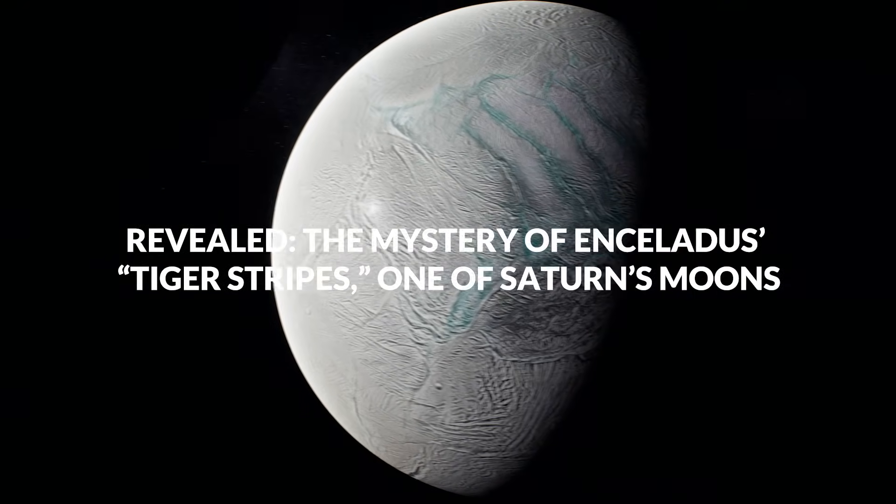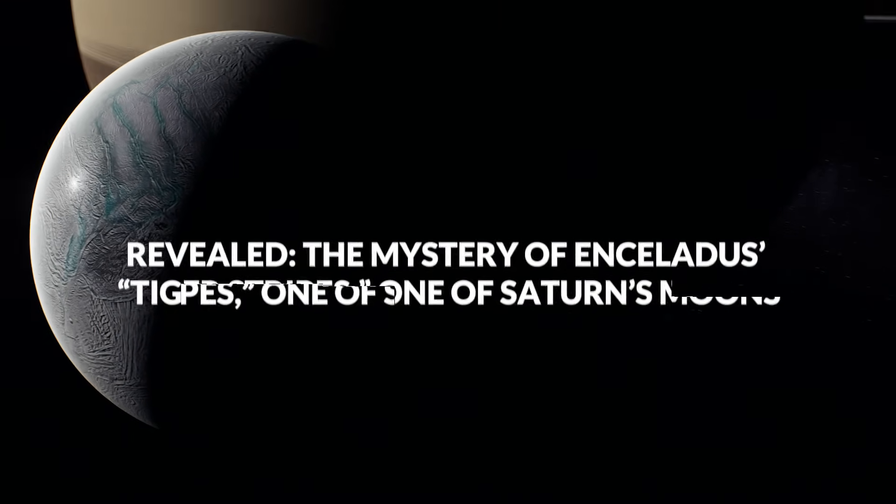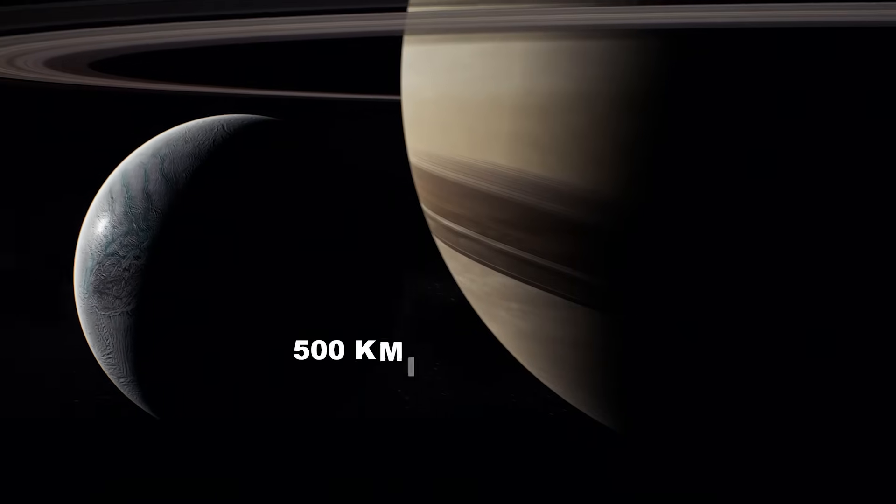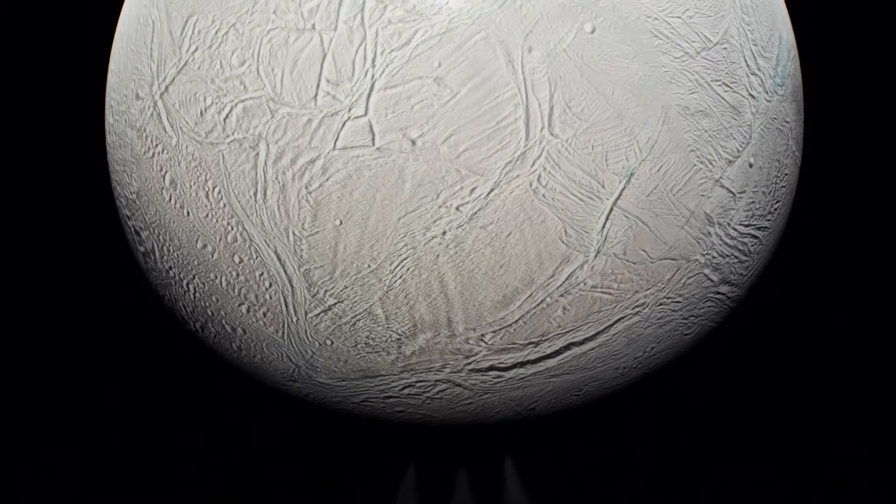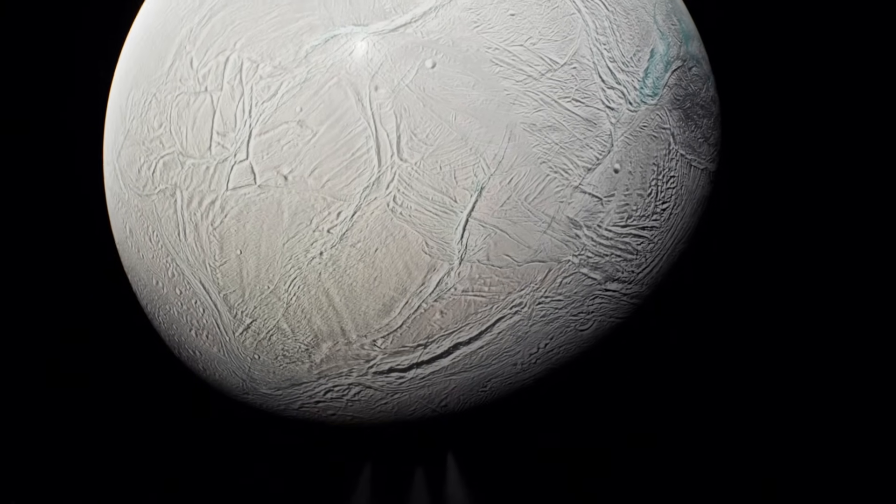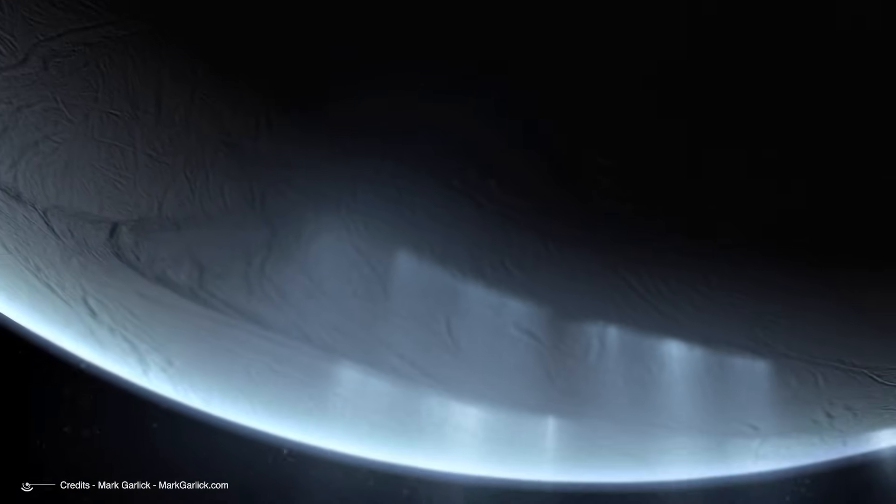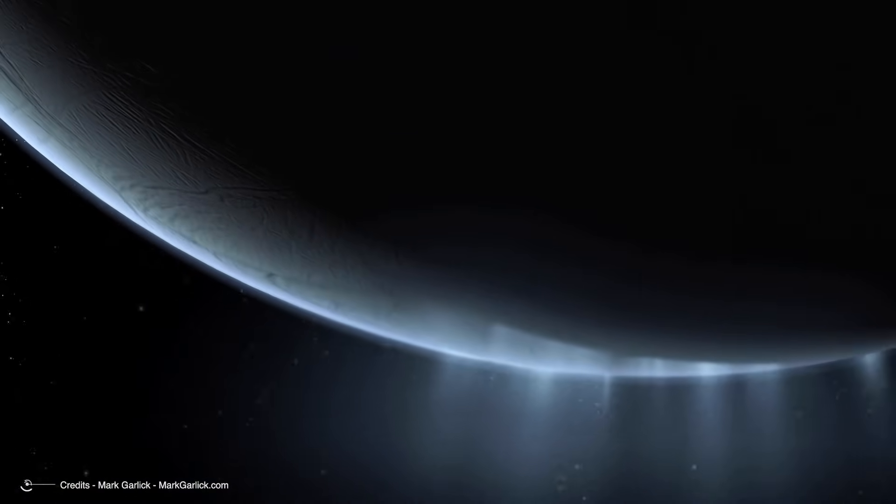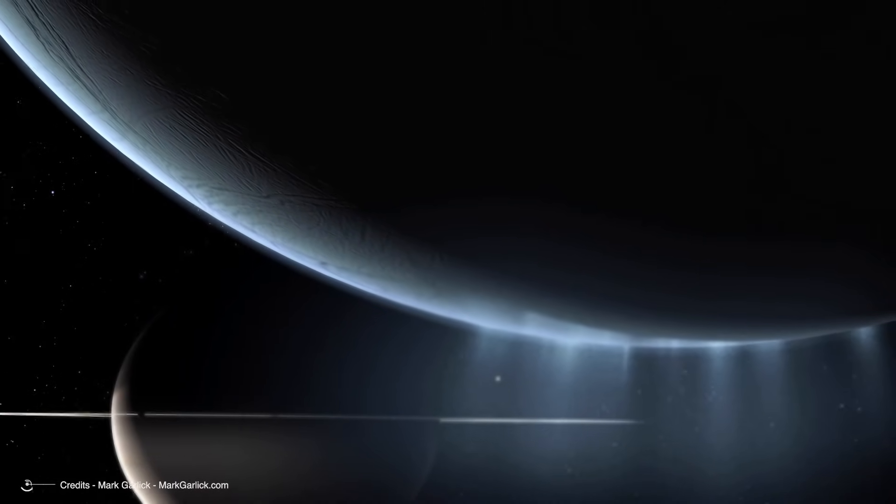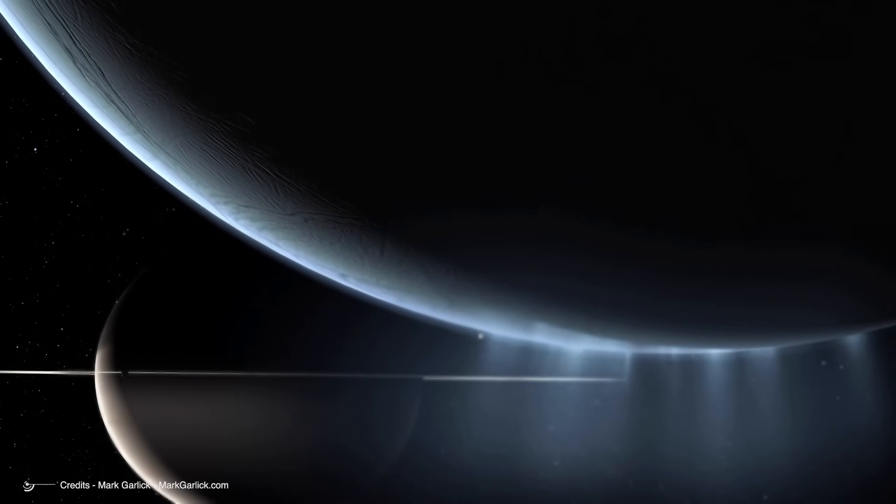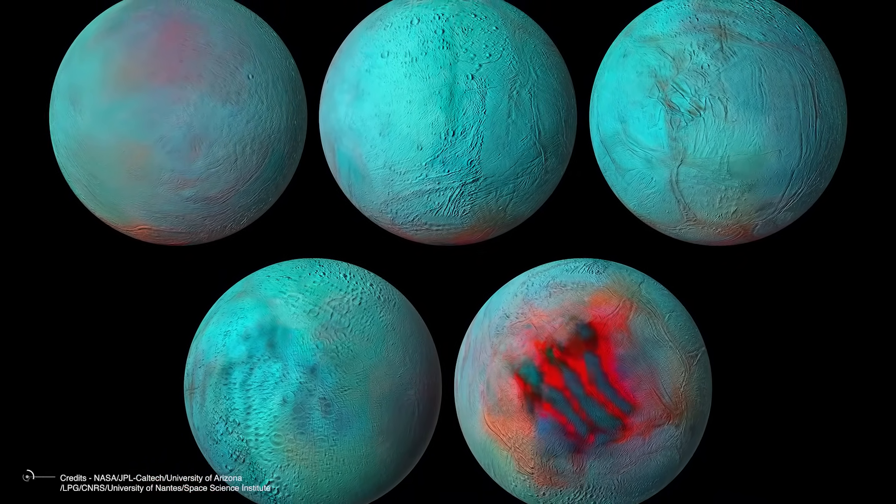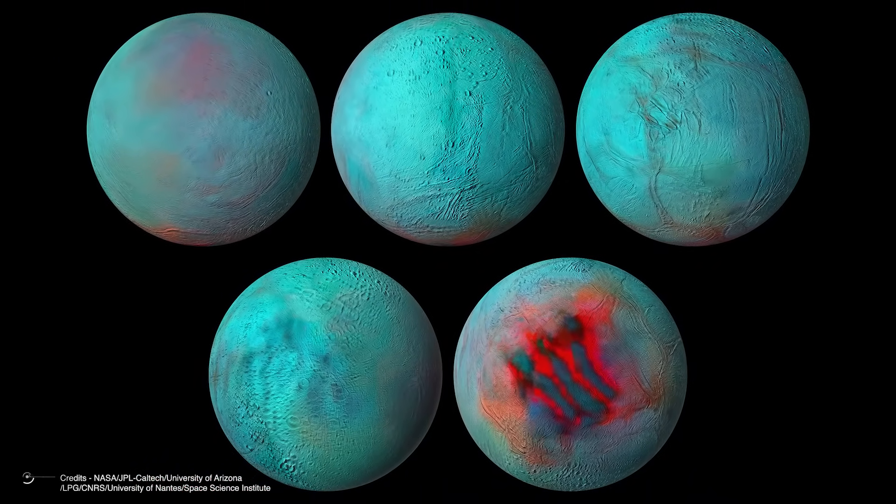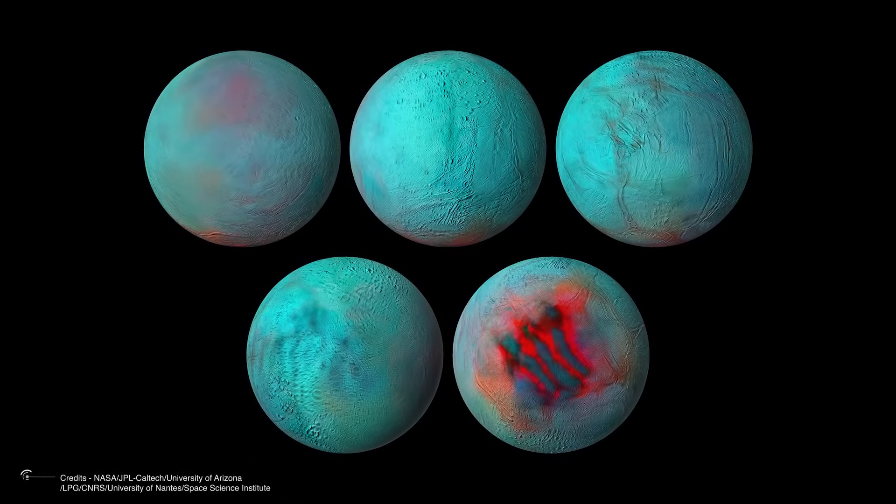The mystery of the tiger stripes of Enceladus, one of Saturn's moons. Despite its small size, only 500 km in diameter, Enceladus is one of the most studied objects in the solar system. Beneath a thick layer of ice several kilometers thick lies a vast ocean, with hydrothermal vents warming its waters and releasing many nutrients, conditions that could hypothetically support life forms. But what has intrigued planetary scientists the most are the long fractures that marked the moon's surface, periodically spewing geysers of vapor along with alternating light and dark stripes, vaguely reminiscent of tiger stripes, the origin of which was still poorly understood.